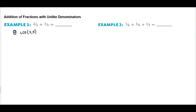If you notice that three is already in prime factorization form and so is five. So three times five is going to give us a lowest common denominator of fifteen.